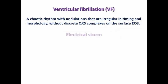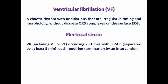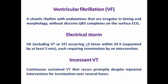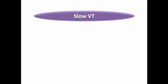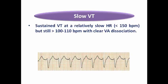Electrical storm is defined as ventricular arrhythmia — either VT or VF — occurring 3 or more times within 24 hours, separated by at least 5-minute intervals, each requiring termination. Incessant VT is continuous sustained VT that recurs promptly despite repeated interventions for termination over several hours, or persists without any ability to restore sinus rhythm.